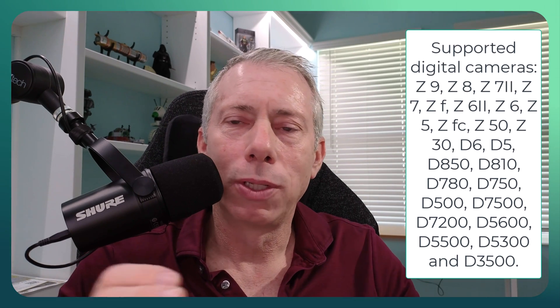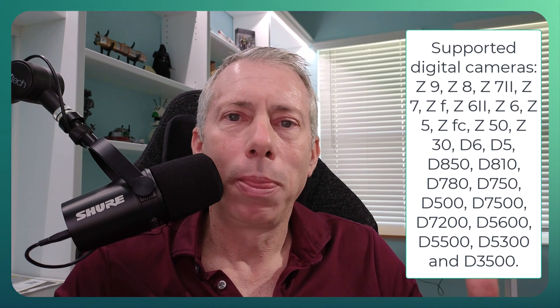It works with a whole bunch of cameras — basically every Z-series camera from the Z9 all the way to the Z30, and a bunch of mirrored cameras from the D6 all the way down to the D3500. So there's a lot of support for Nikon cameras. All you really need is a USB-C cable to hook your camera up, and there's even a way around that if you wanted to use HDMI, but you'd need an extra piece of hardware.